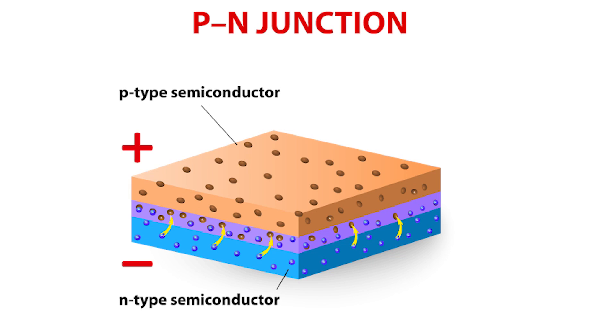When a P-N junction is formed, some of the electrons from the N region, which have reached the conduction band, are free to diffuse across the junction and combine with holes.